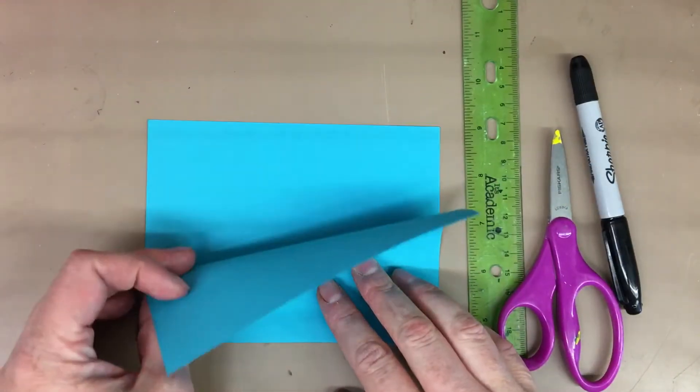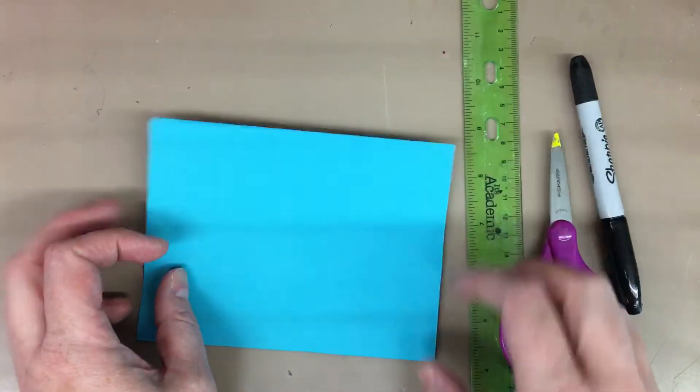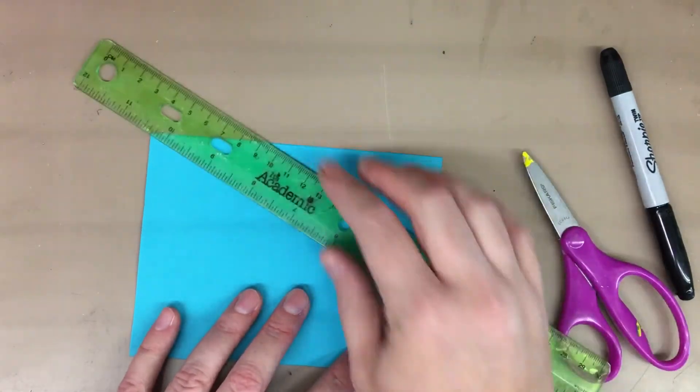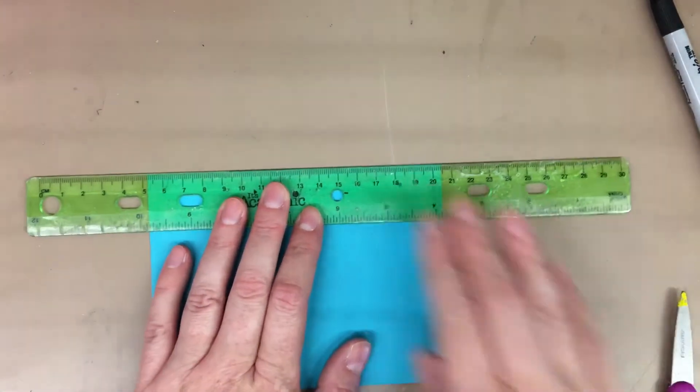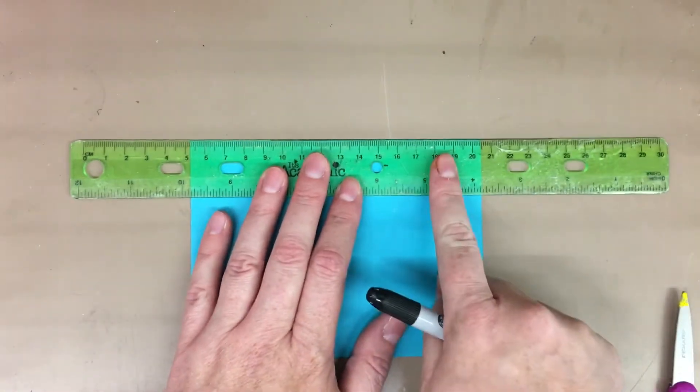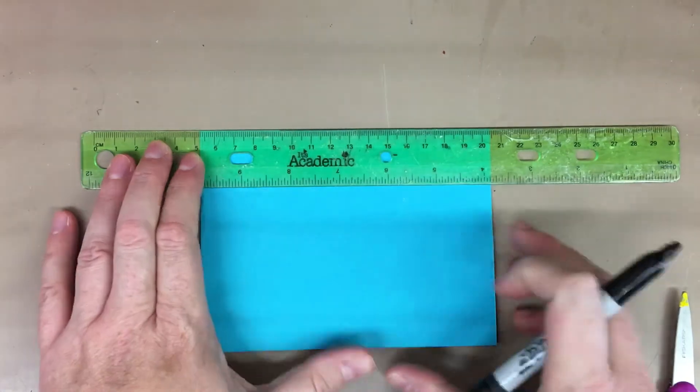So up here on the open side - it's getting ready to quack like a little duck bill - I'm going to put my ruler here. This is just a good general guideline, normally like an inch, inch and a half. Then I'm going to make a line on the open side, right here.